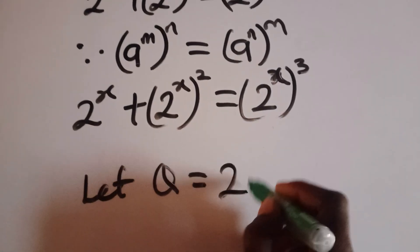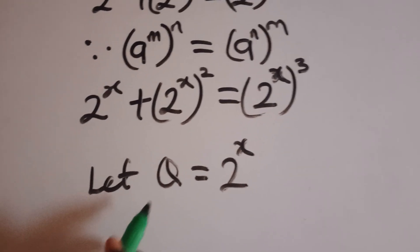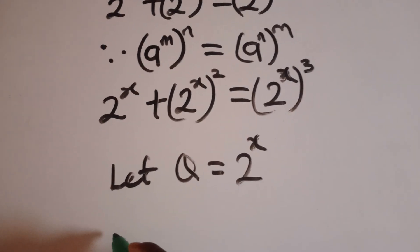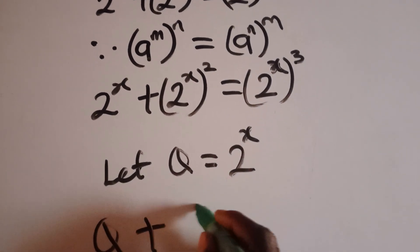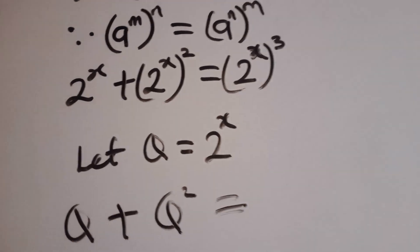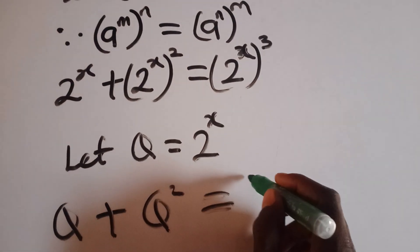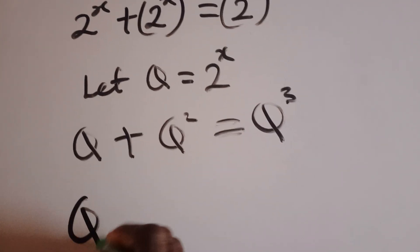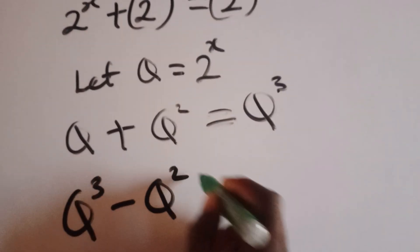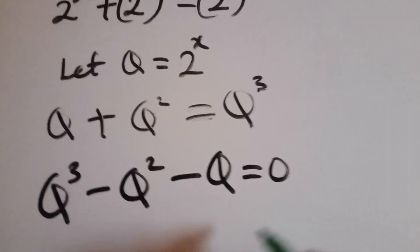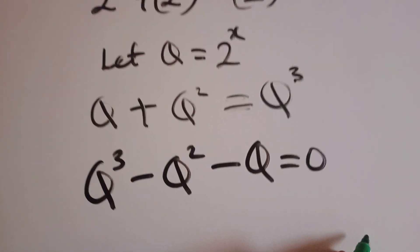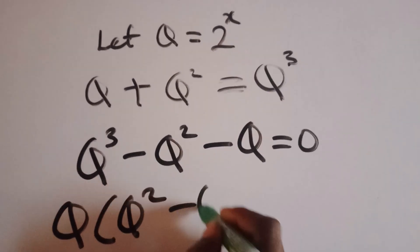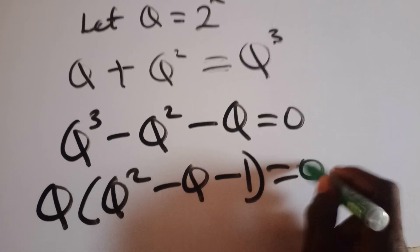Let's represent q to be equal to 2 raised to the power x, then substitute q wherever we have 2 raised to the power x. We have q plus q squared equal to q cubed. Rearranging, we get q cubed minus q squared minus q equal to zero. Since q is common to all three terms, let's factor out q, giving us q times (q squared minus q minus 1) equal to zero.